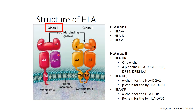The reason we don't type the beta-2 microglobulin is because it is the same for all individuals — if I typed my beta-2 microglobulin, it would be very similar to yours. But the alpha chain is very polymorphic, and that's why we focus on HLA typing for the alpha chain.